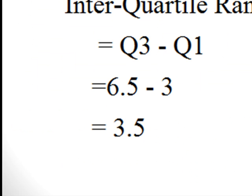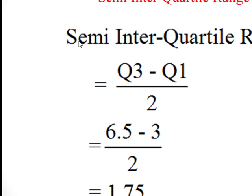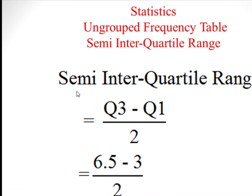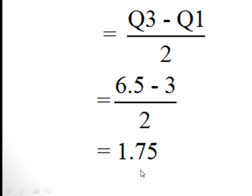The interquartile range is Q3 minus Q1, which is 6.5 minus 3, giving 3.5. The semi-interquartile range — 'semi' means half — is (Q3 − Q1) ÷ 2, so 6.5 minus 3 = 3.5, divided by 2, which equals 1.75.